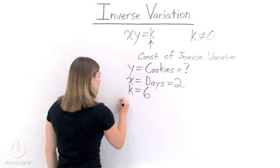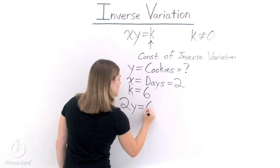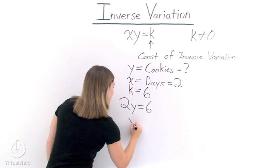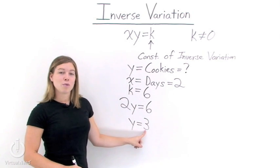Let's plug it into our formula. We have x, which is 2, times y, equal to k, which is 6. When we solve for y, we get y equals 3. So there are three cookies in the jar.